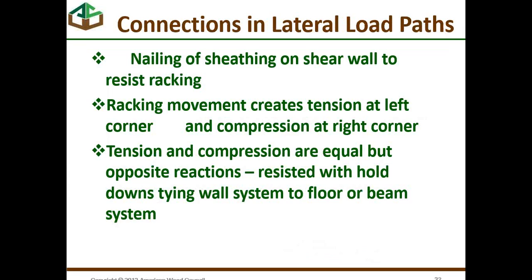Connections in lateral load paths require a couple of notions. First, we have to nail the sheathing on the shear wall to resist racking. There are tables of resistances in pounds per linear foot based on sheathing thicknesses and nailing spacing. Then the racking movement that creates tension at the left corner and compression at the right is resisted by tie-downs or hold-downs. The nailing is connection number one, and the tension and compression on the two corners is shown as 2T and 2C.